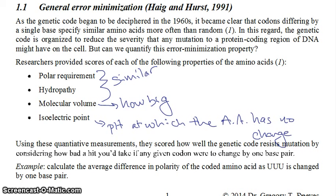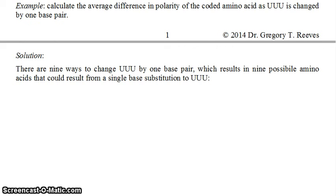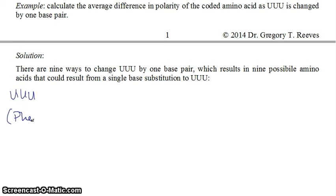Using these quantitative measurements, they scored how well the genetic code resists mutation by considering how bad a hit you'd take if any given codon were to change by one base pair. For example, let's calculate the average difference in polarity of the coded amino acid as UUU is changed by only one base pair. There are nine different ways that you can change UUU by one base pair, which results in nine possible amino acids that could result from this single base substitution. UUU codes for phenylalanine, and phenylalanine has a polarity scored by those researchers of 5.0.